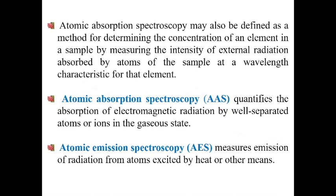Atomic absorption spectroscopy may be defined as a method for determining the concentration of an element in a sample by measuring the intensity of external radiation absorbed by the atoms of the sample at a wavelength characteristic for that element. Absorption spectroscopy quantifies the absorption of electromagnetic radiation by well-separated atoms or ions in the gaseous state. In emission spectroscopy, we measure the emission of radiation from atoms excited by heat or other means; when they return to the ground state, they emit radiation of characteristic wavelength.